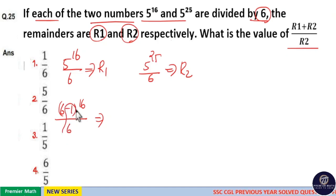But minus 1 raised to 16. Minus 1 raised to 16 means plus 1. So plus 1 by 6 means here remainder is 1. So R1 is 1 here.